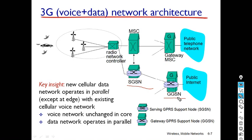GPRS stands for General Packet Radio Service, which we also use in 2G. In 3G we refer to this component as the SGSN. The main function of the SGSN is to route datagrams from the Radio Access Network.